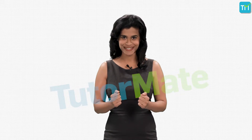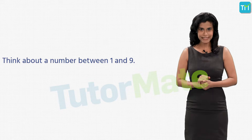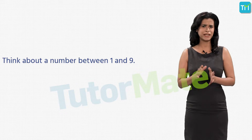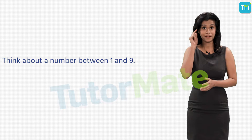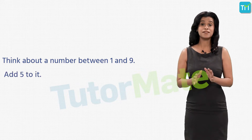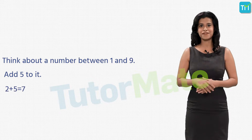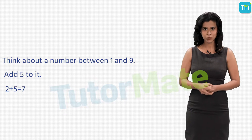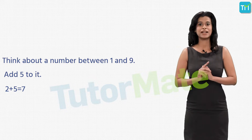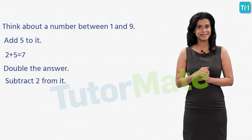I suggest you quickly grab a paper and pen to do the calculations — don't worry, the calculations are very simple. Just follow my instructions step by step. First, think of a number, any number between 1 and 9. Next, whatever this number is, add 5 to it. So if your number is 2, you add 5 to get 7. Now double the answer and then subtract 2 from it.